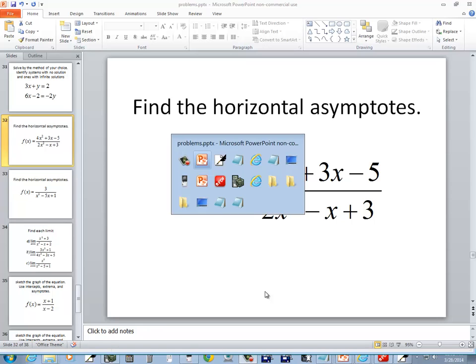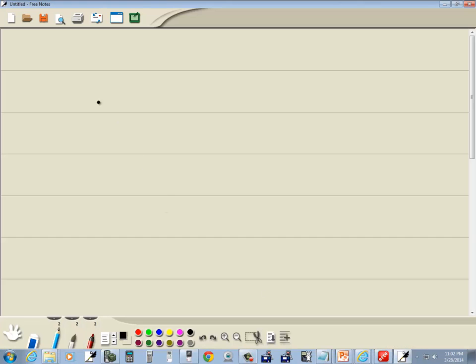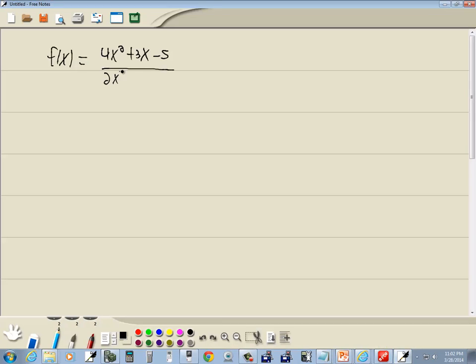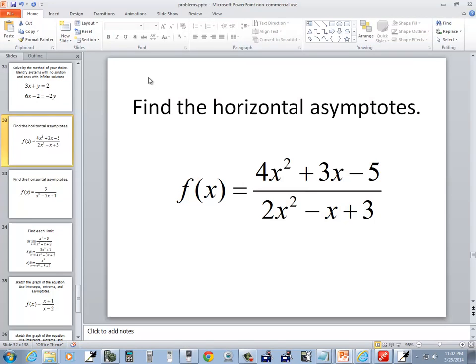Let's take a look at this problem. We've got f of x is equal to 4x squared plus 3x minus 5 all over 2x squared minus x plus 3.